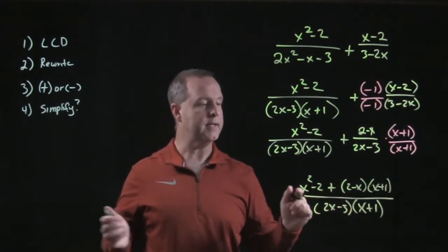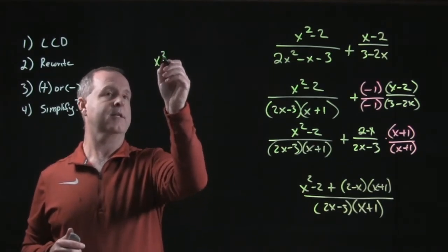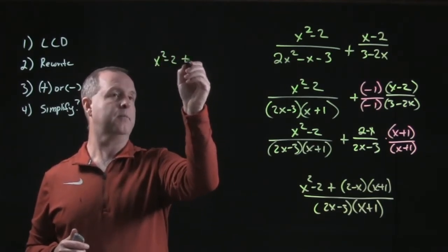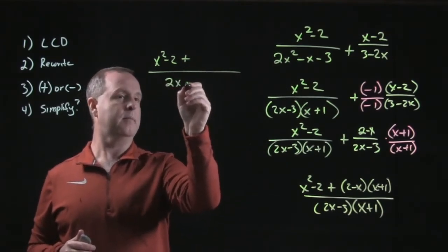Let me start to transition it over here: x² - 2 plus—I'm going to leave that for a second. Then on the bottom I have (2x - 3) times (x + 1).